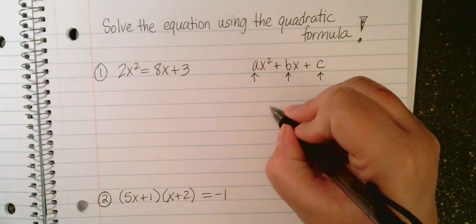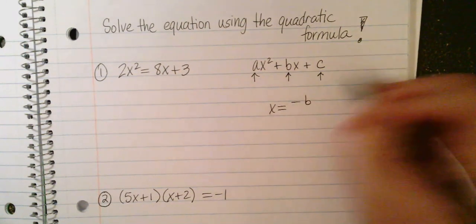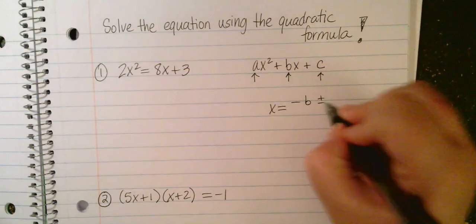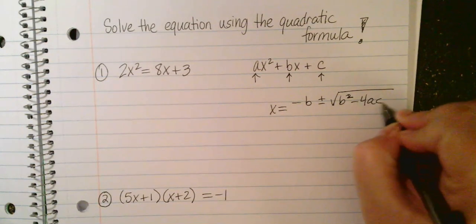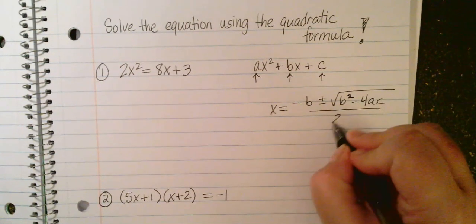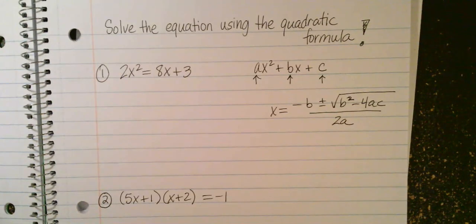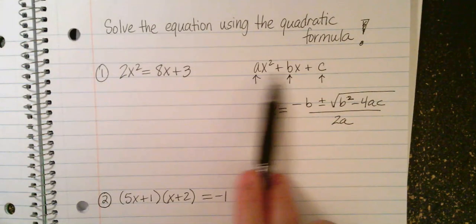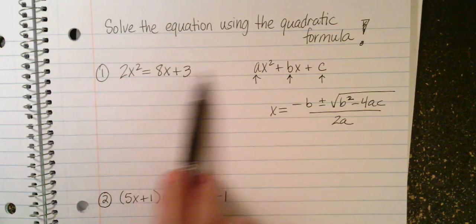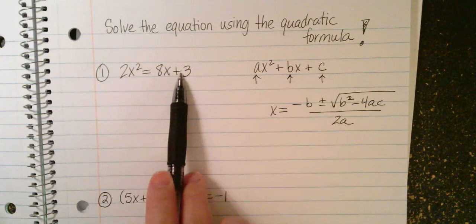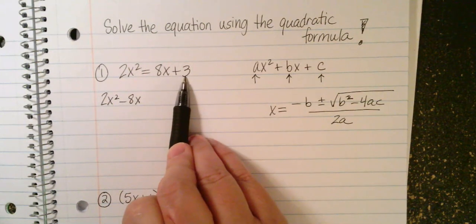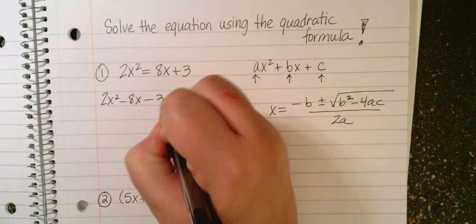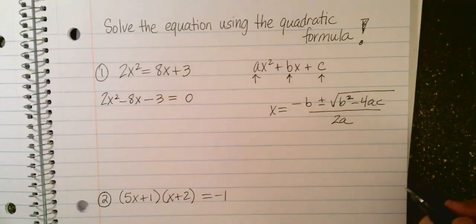Then we can use the quadratic formula, which says that your x is equal to the opposite of B, plus or minus the square root of B squared minus 4AC all over 2A. The first one here, it's pretty close to being in standard form. All I'm going to do to get this in standard form is I have 2x squared, subtract 8x from both sides gives me minus 8x, and then it's gone from this side. Subtract 3 from both sides gives me minus 3, and then it's gone from this side. And so I just have equal 0.